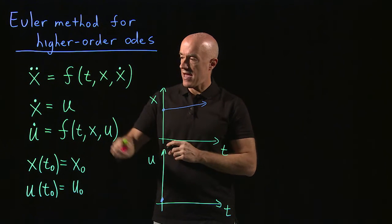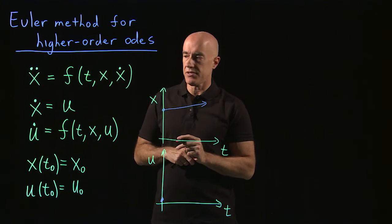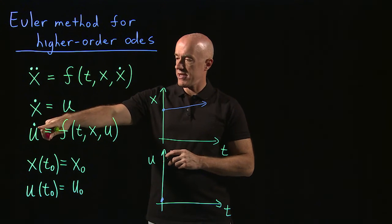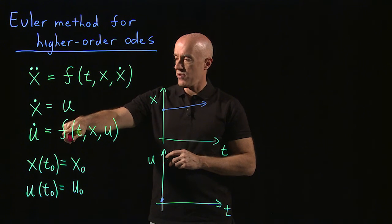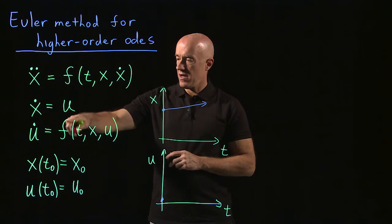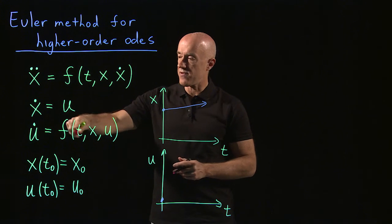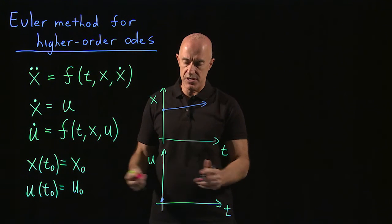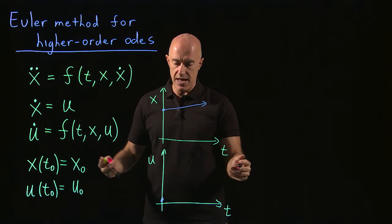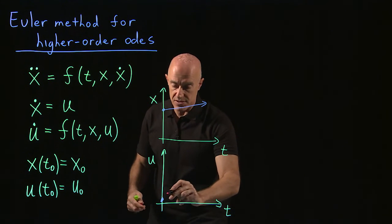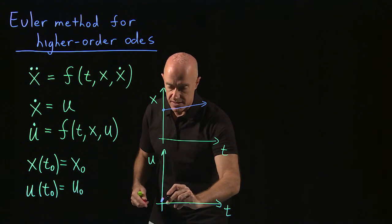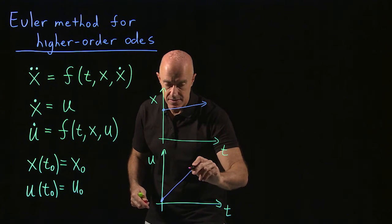And then what does the u equation tell us? The u equation tells us the slope is going to be f at t equals zero, x equals x naught, and u equals u naught. So whatever the value of this f function is, and that could be anything. So let's say the slope is positive and increasing, so something like this.